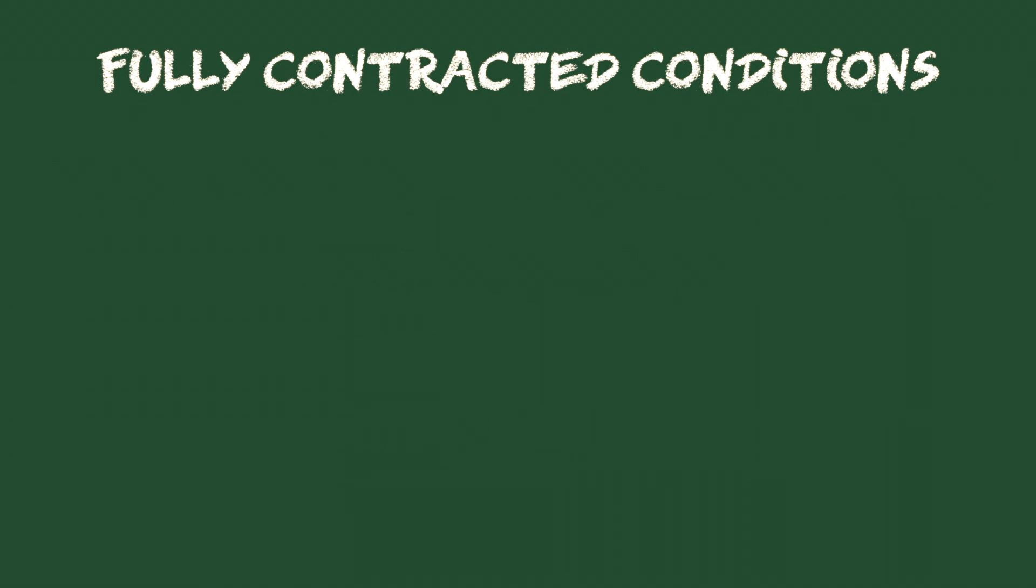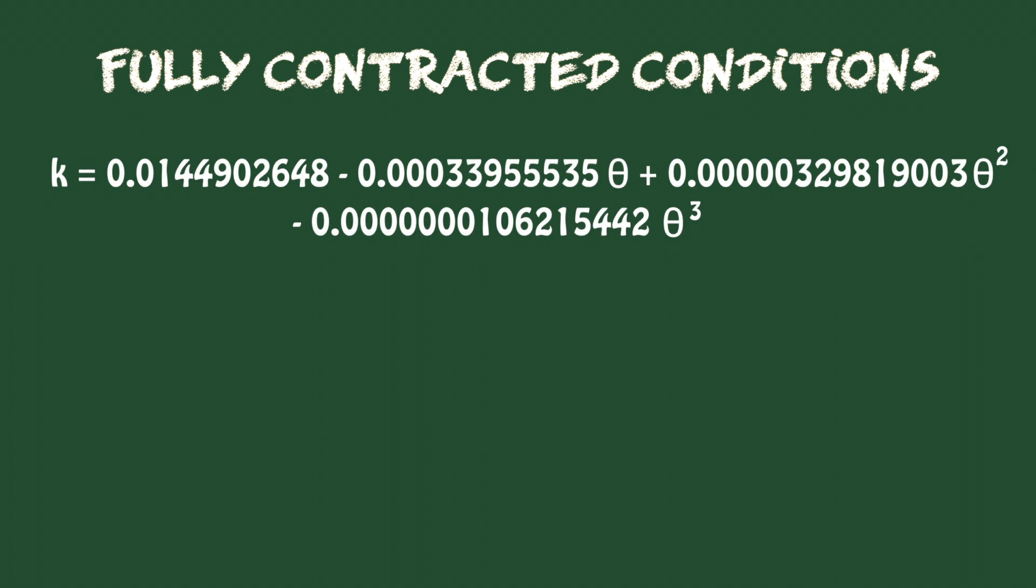The head correction, K, is also a function of the angle theta of the weir. In this case, for theta equals 90 degrees, the head correction K is 0.0029.